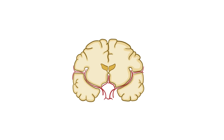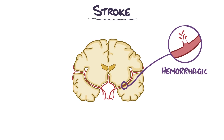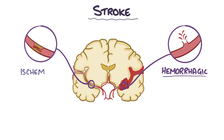There are two main types of stroke: a hemorrhagic stroke, which occurs when an artery ruptures and bleeds within the brain, and an ischemic stroke, which occurs when an artery gets blocked.